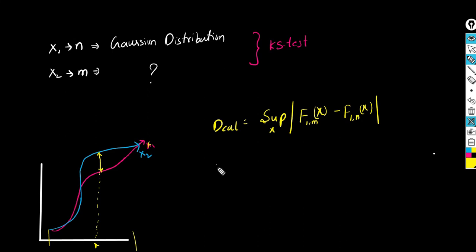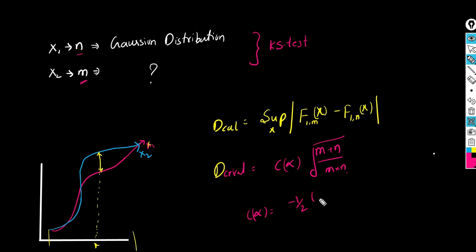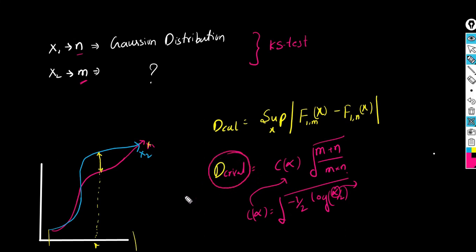Now we are going to find the D_critical value. D_critical is equal to c_alpha times the square root of (m + n) / (m × n), where m and n are the number of points in x1 and x2 respectively. Note that the more points we consider, the lower D_critical will be. Here c_alpha is equal to the square root of minus one-half times log of alpha over 2. The alpha value is given in the problem statement, and by substituting c_alpha we get D_critical.